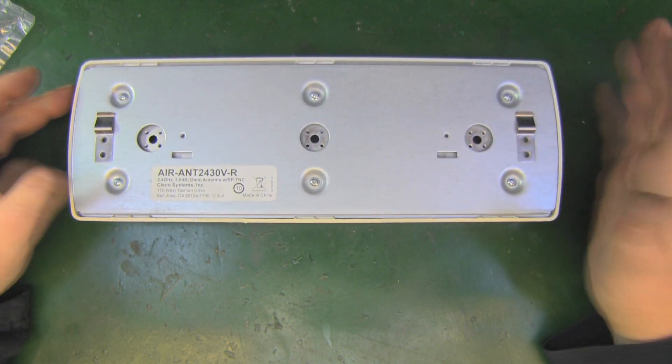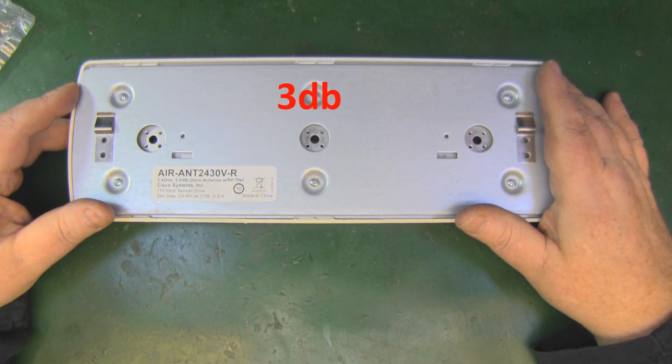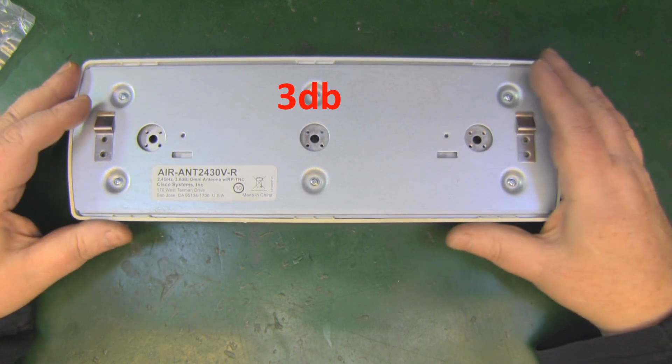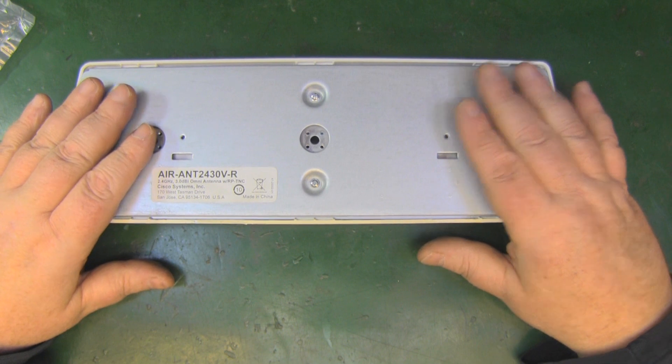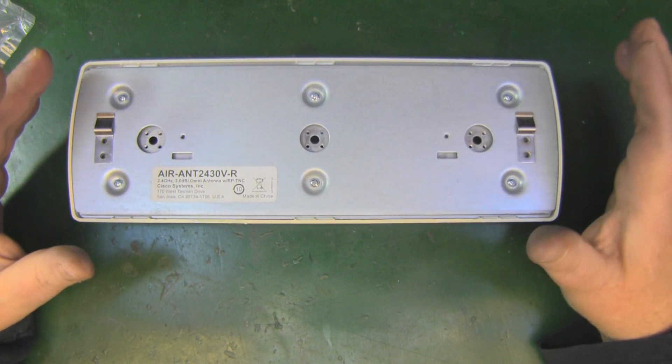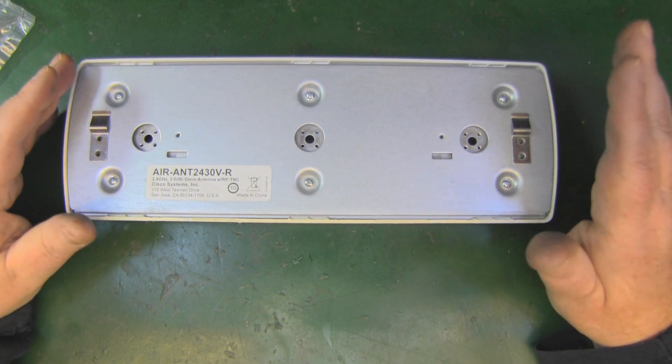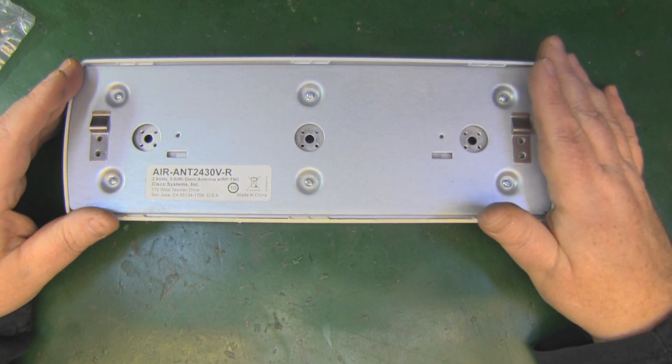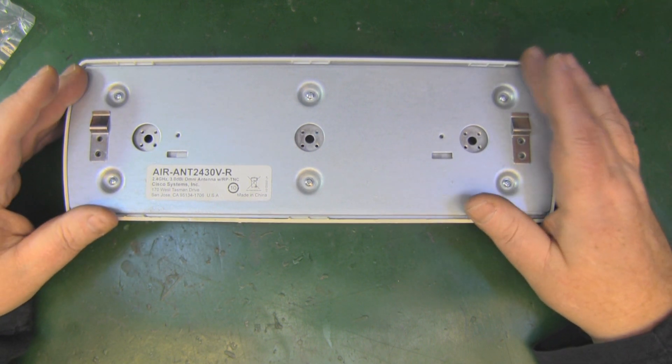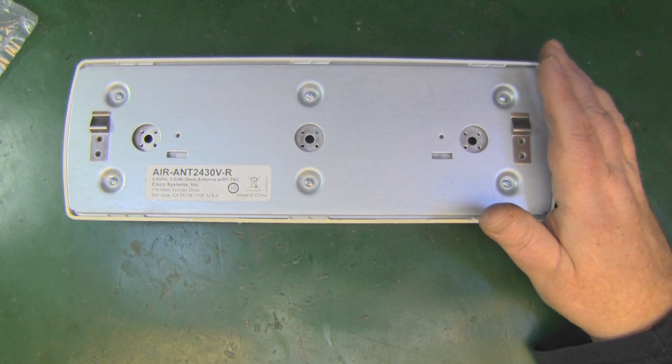We don't have to take this antenna to pieces to understand what kind of antenna element they're using because we have them here in this bag. This antenna consists of three simple monopoles.